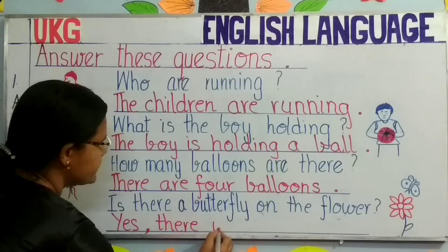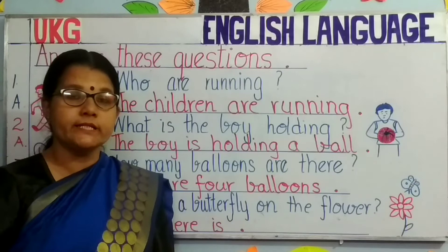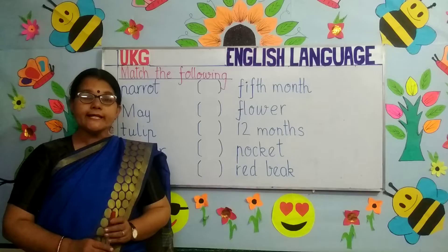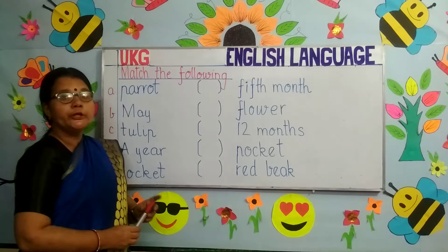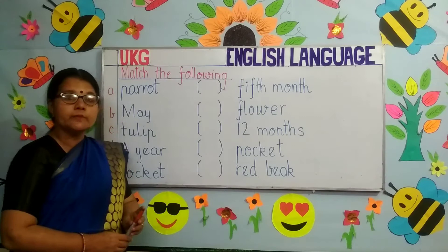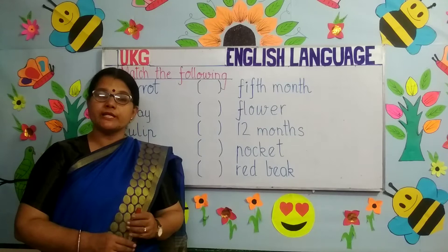Children, you need to practice these types of questions and answers. Next topic is: Match the following. Children, you can see words in both the columns. You need to match the words from the first column with the words in the second column. I will be showing you all a few pictures which will help you to match both the columns correctly.